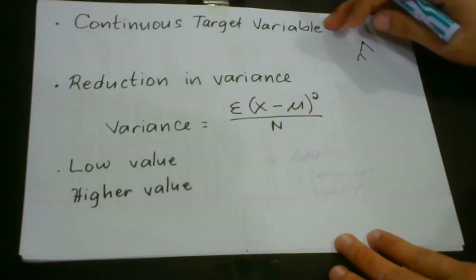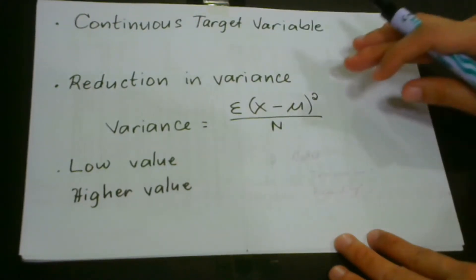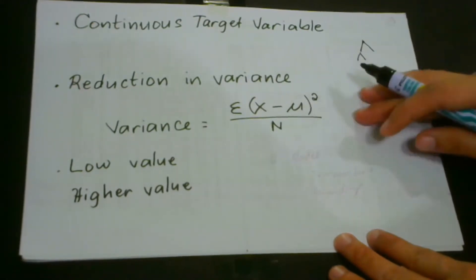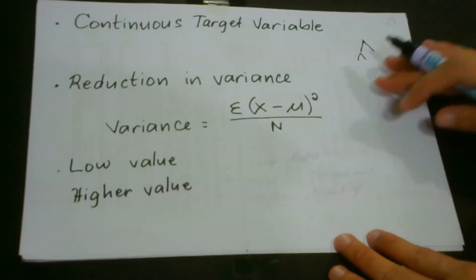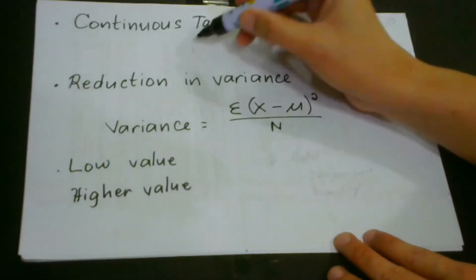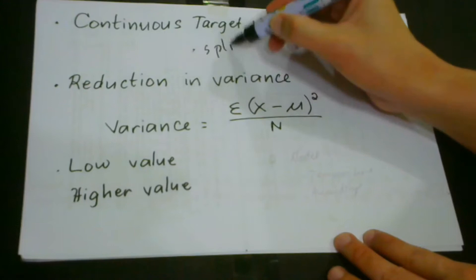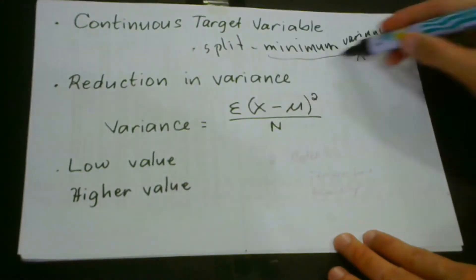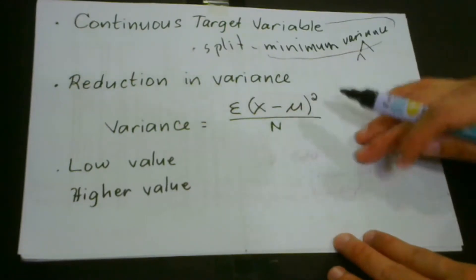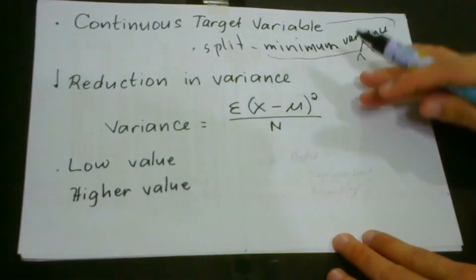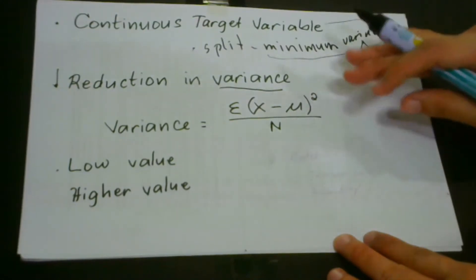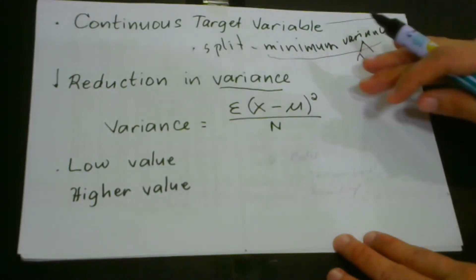For a continuous target variable, what we do is split various nodes and then calculate the total weighted variance of each split. What we choose is the split that has the minimum variance. The kind of splitting method we use is called reduction in variance. We use variance to decide on which feature a certain node is split into child nodes.